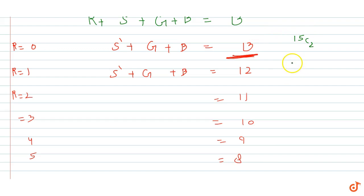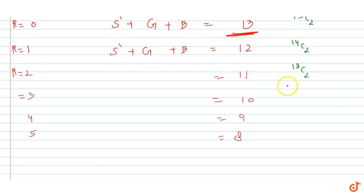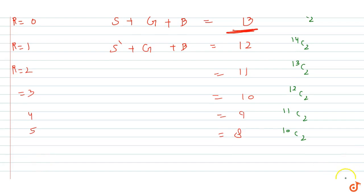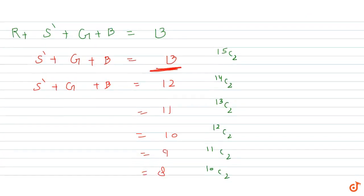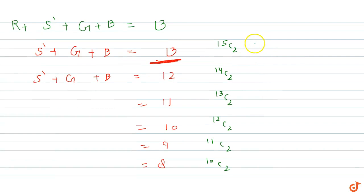Then we get 12 plus 2 which is 14C2. Then we get 11 plus 3 minus 1 which is 13C2. The value becomes 12C2. Then we get 11C2, and similarly the last one is 10C2. We need to find the sum of all these values.